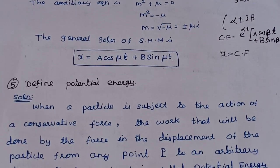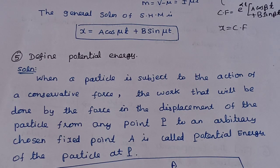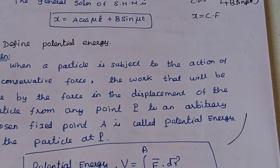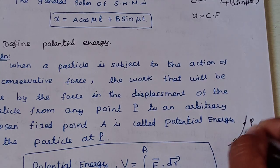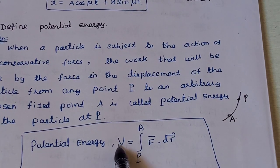Define potential energy. When a particle is subject to the action of a conservative force, the work done depends on the initial and final position of the particle, not on the path. Potential energy definition: when a particle is subject to the action of a conservative force, the work done by the force in displacing the particle from any point P to an arbitrary fixed chosen point A is called the potential energy V at point P.